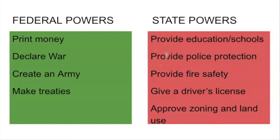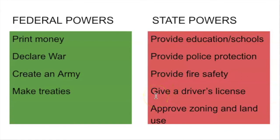The state also decides how much money is spent on police protection and how the police should carry out their duties to protect the people. The state decides on fire safety and ambulances. The state is the one that gives a driver's license. Here in Maryland and Virginia, you can get a driver's license at about 16, but in Texas you can get one younger — sometimes 15, sometimes 14. It depends on the state.